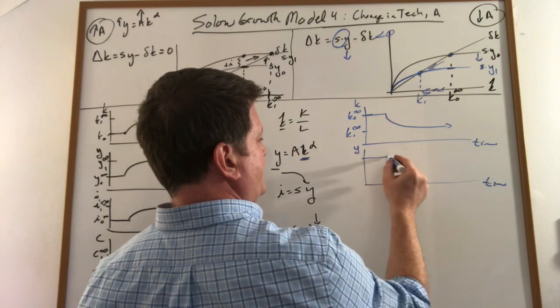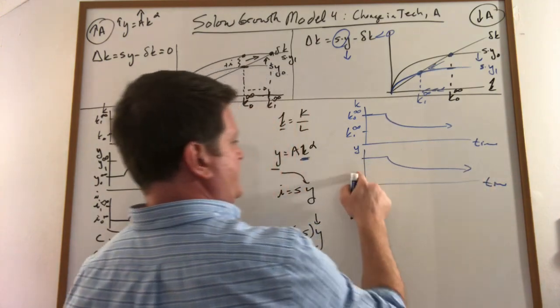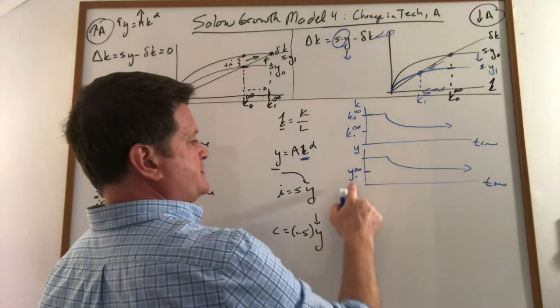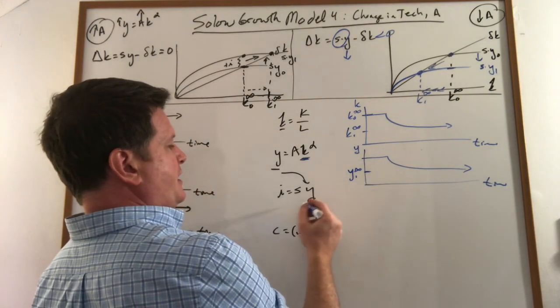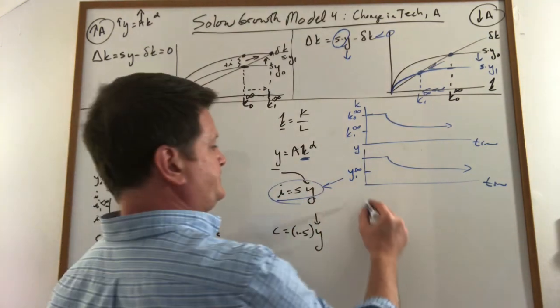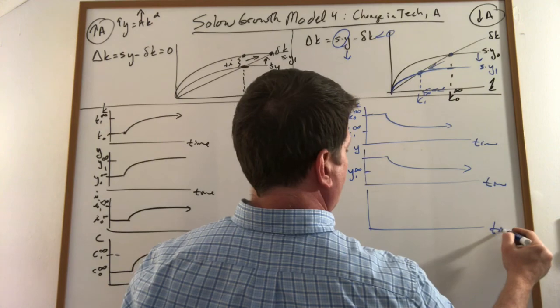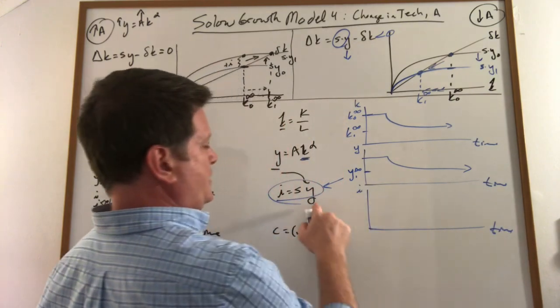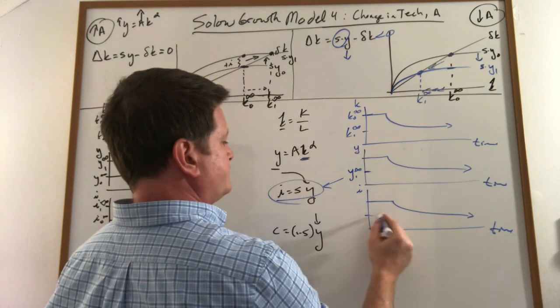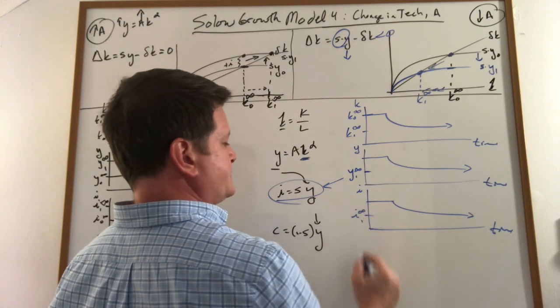It's going to follow this same path because it is just a function of capital. Since I know what happens to GDP, I can figure out what happens to investment. It's going to now decline just like this until it reaches its new steady state.